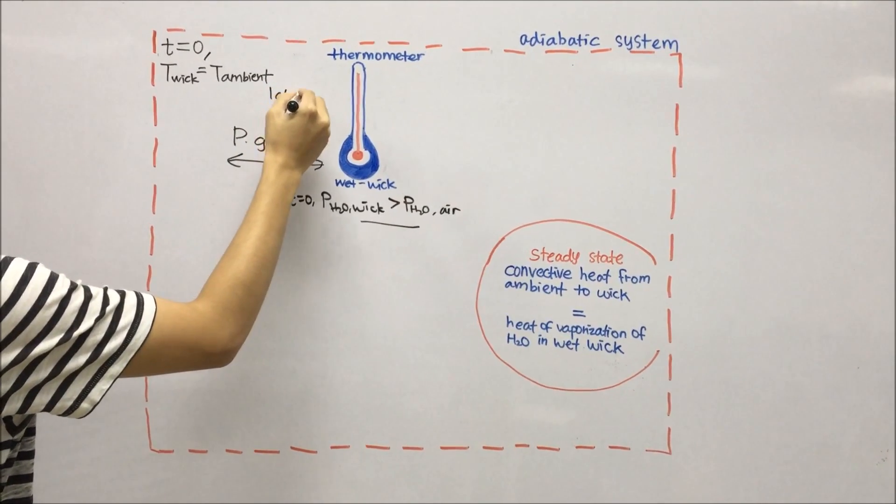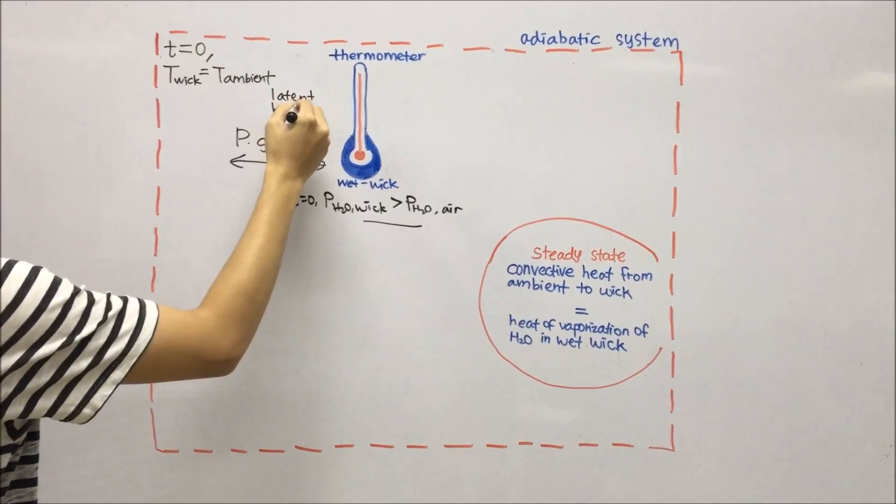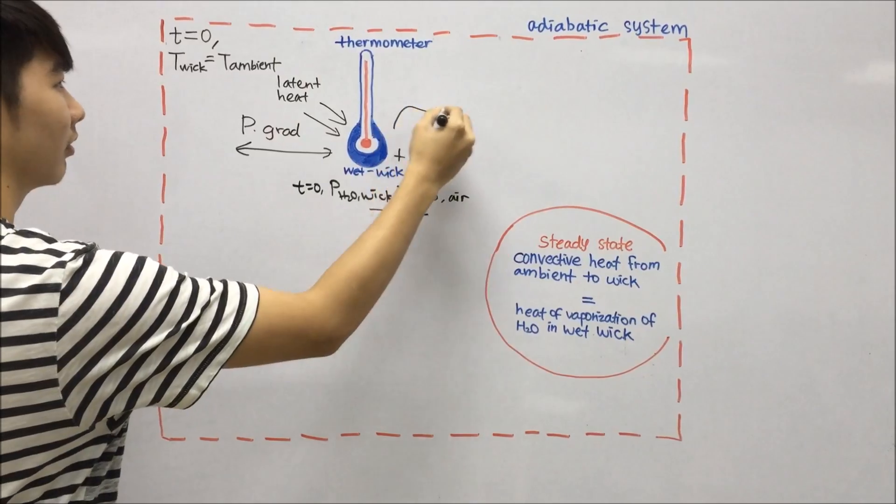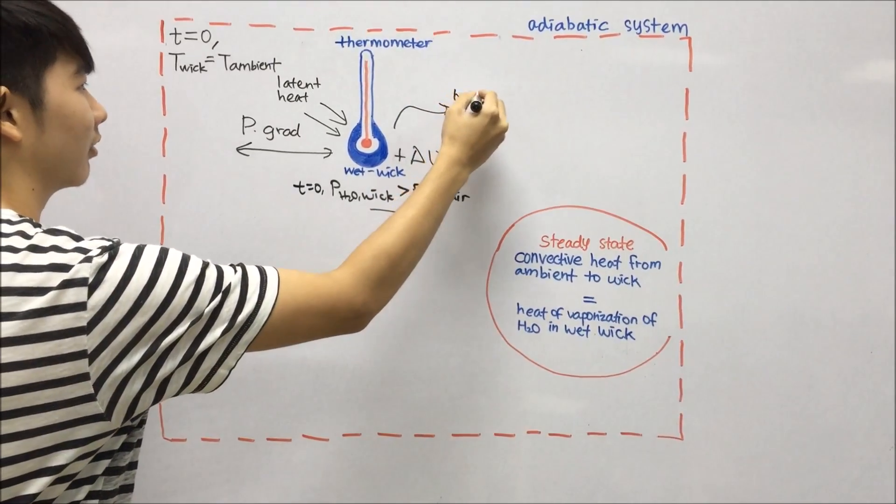As a result, the moisture in the wick absorbs enough latent heat of vaporization from its own internal energy. The moisture evaporates and releases heat to the ambient.